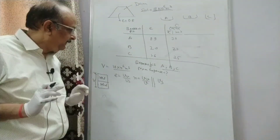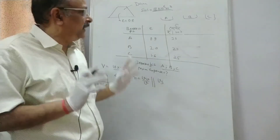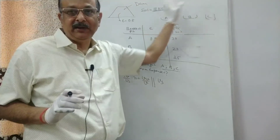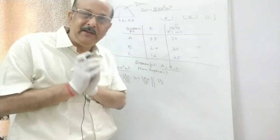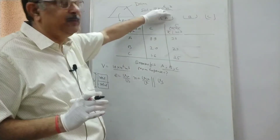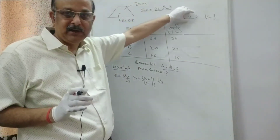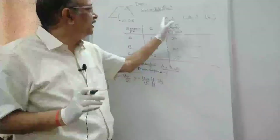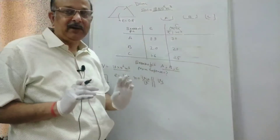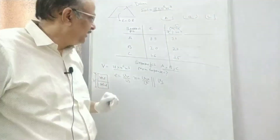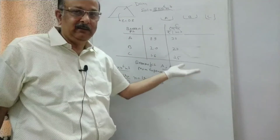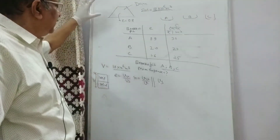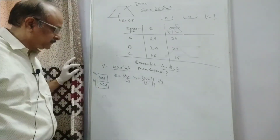So basically, what we have to do is find the volume of the solid. The main concept of this question is that whether you use borrow pit A, B, or C, the volume of the solid will remain the same. Since the void ratio of the soil is different, the total volume is different, and since the rate is different, the cost is different. In that case, we will select the minimum cost. We will find the volume of the solid.